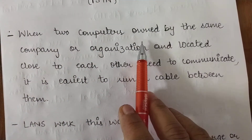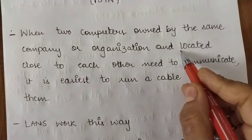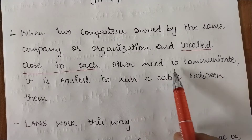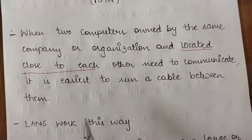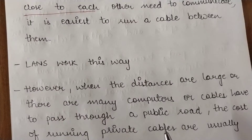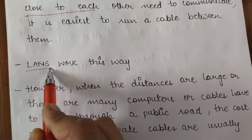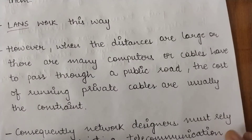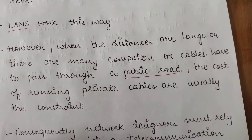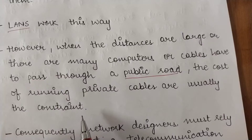When two computers owned by the same company or organization are located close to each other — that means they are in close proximity — and when such computers need to communicate, it is easiest to run a cable between them. This is how LANs work. However, when the distances are large or cables have to pass through a public road, the cost of running private cables is usually the constraint, and it is quite a complicated task.